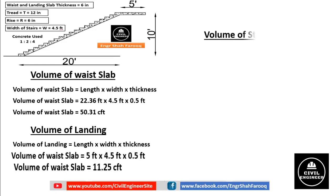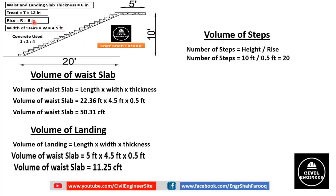Now we will determine the volume of the steps, for which we first calculate the number of steps. Number of steps equals height divided by rise. Height is 10 feet and rise is 6 inches or 0.5 feet, so number of steps equals 10 ÷ 0.5 = 20 steps.